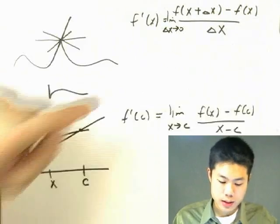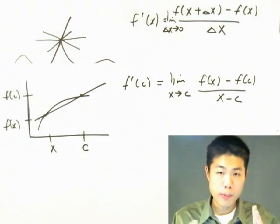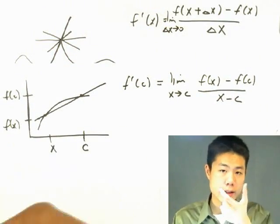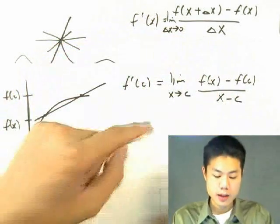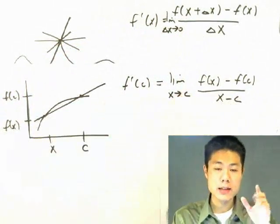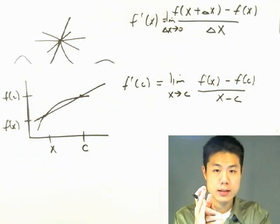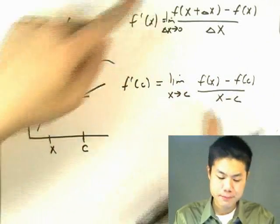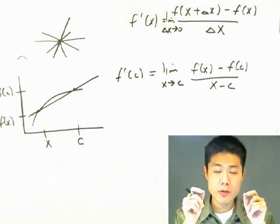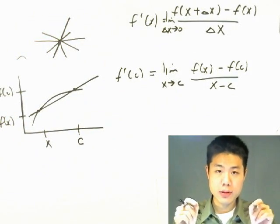What's the difference between this and this? Same thing. In both cases, we're making delta x smaller. Here, delta x is going to be smaller. Here, instead of writing delta x, we're saying that c is getting closer to x, which is the same thing. In both cases, we're moving the two x components closer together.